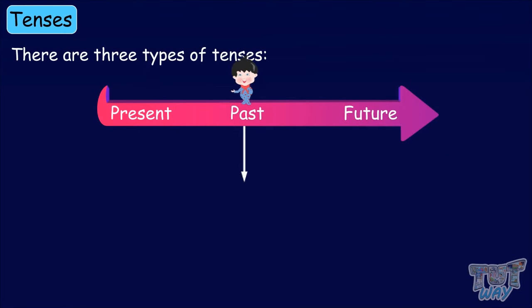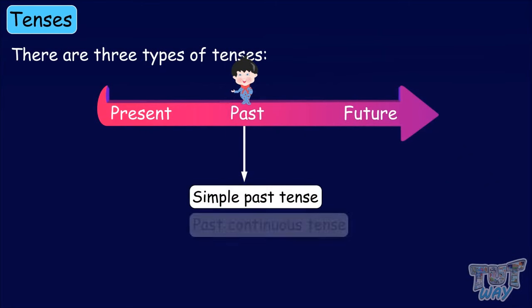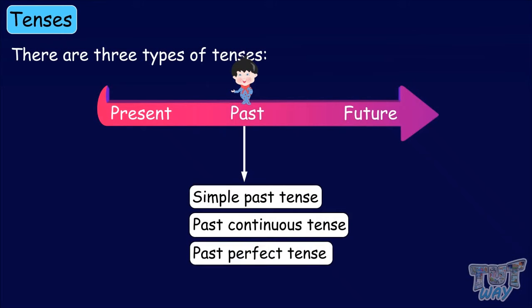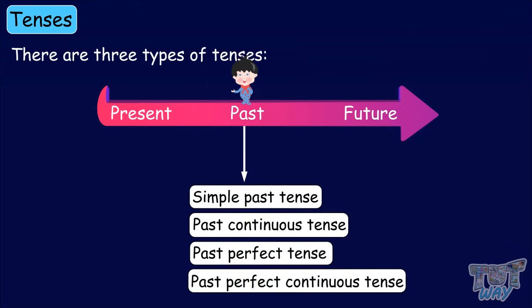Past tense is further divided into four types: simple past tense, past continuous tense, past perfect tense, and past perfect continuous tense.